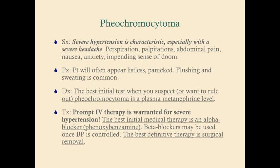The best initial medical therapy for pheochromocytoma is a non-selective alpha blocker blocking both alpha-1 and alpha-2 receptors. Phenoxybenzamine and phentolamine are good choices. Do not use beta blockers as initial therapy because you can worsen the hypertension. You can add beta blockers after blood pressure is controlled. Just remember: alpha comes before beta, like in the Greek alphabet. Definitive therapy is surgical removal.